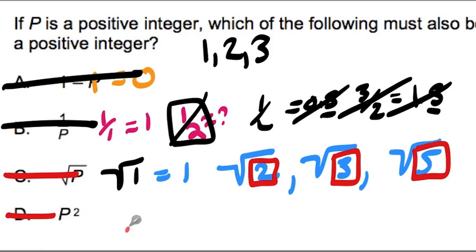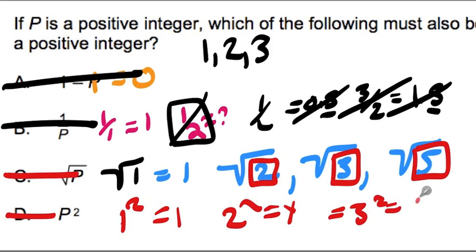And finally, P squared. Well, if I test this out with 1, 1 squared is 1, 2 squared is 4, 3 squared is 9, you get the idea. 1, 4, and 9 are all positive integers. They're all numbers that are divisible by 1 with no remainder. And they happen to all be positive.